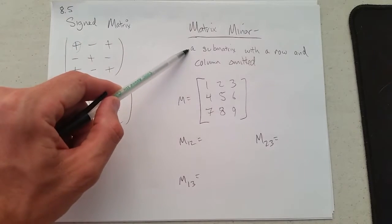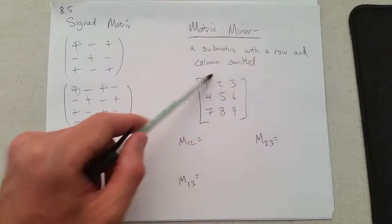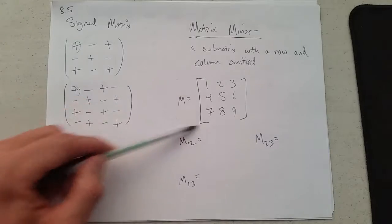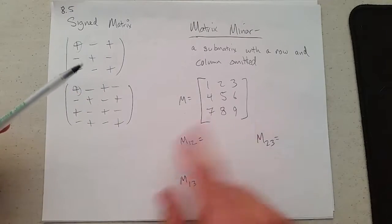Now minors—a minor is a submatrix where you remove a row and a column. So if this is our original matrix here, 1, 2, 3, 4, 5, 6, 7, 8, 9, M1,2...